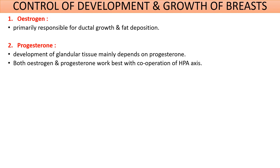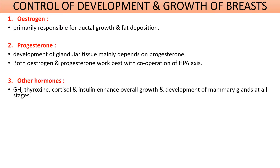The second hormone is progesterone. The development of glandular tissue of the breast mainly depends on this hormone. Other hormones like growth hormone, thyroxin, cortisol, and insulin also enhance the overall growth and development of the breast at all stages.